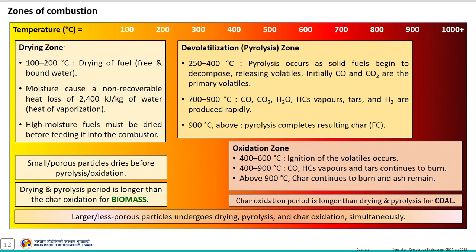The first is the drying stage, where drying of fuel takes place in the temperature range of 100 to 200 degrees Celsius. During this stage, free and bound moisture — water — is released from the fuel. This moisture causes a non-recoverable heat loss of 2400 kJ per kg of water, which is the heat of vaporization of water. Therefore, high moisture fuels must be dried before feeding into the combustor.